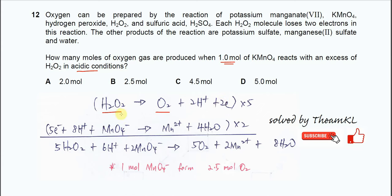Then continue with the other half-equation, which involves the manganese(VII) ion. Manganese(VII) ions, from the information given, form manganese(II) ions after reaction. So you put these two together in one half-equation: MnO4⁻ → Mn²⁺. After that, you need to balance the oxygen. On the left-hand side there are four oxygens, so on the right-hand side you add four H2O.